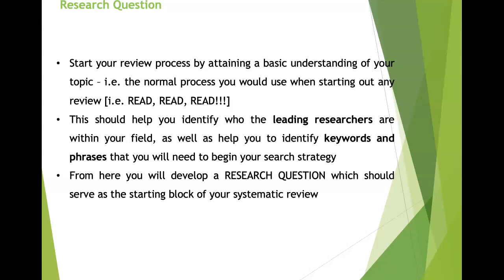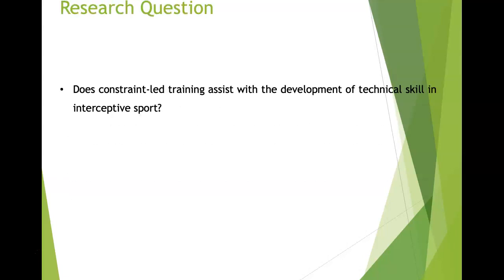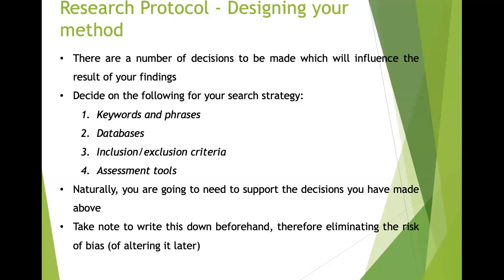From here you develop a research question, which should serve as the starting block of your systematic review as it would for an empirical study. Here's an example of a research question my group used: does constraints-led training assist with the development of technical skill in interceptive sport? I'll give you some examples from our systematic review as we go along.